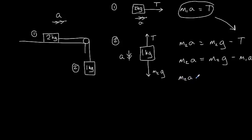Let's group our a terms together. So we have m2a plus m1a is equal to m2g. We can factorize that, a multiplied by m1 plus m2 is equal to m2g.